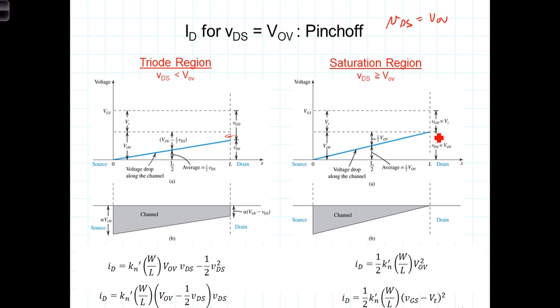Current continues to flow because you have a significant voltage drop between the drain and the source, and so the electrons are swept across this depletion area on through the channel to the source, or the electrons actually are swept from the source on through across the depletion pinched-off area here into the drain. Of course, we think of the traditional current going the opposite direction.